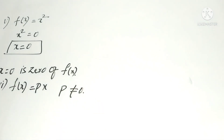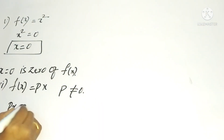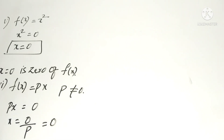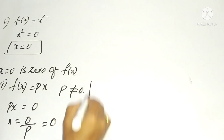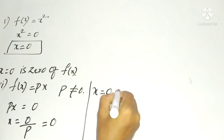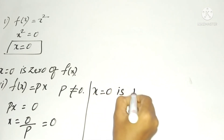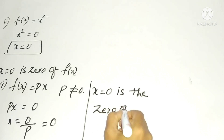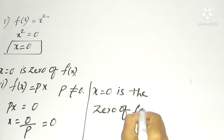The sixth problem: f(x) = px, where p ≠ 0. Take the polynomial px and equalize to zero. Then x = 0/p, which equals zero. So x = 0 is the zero of f(x).